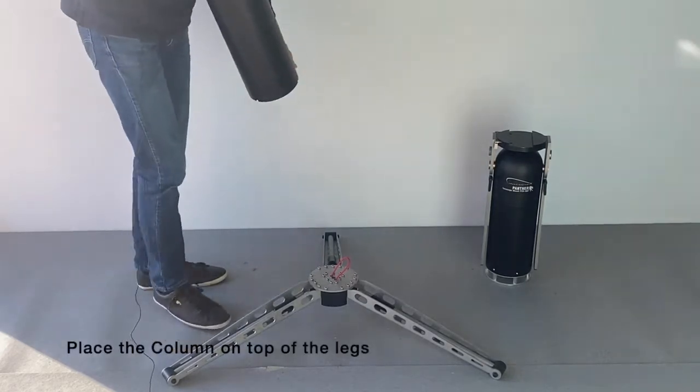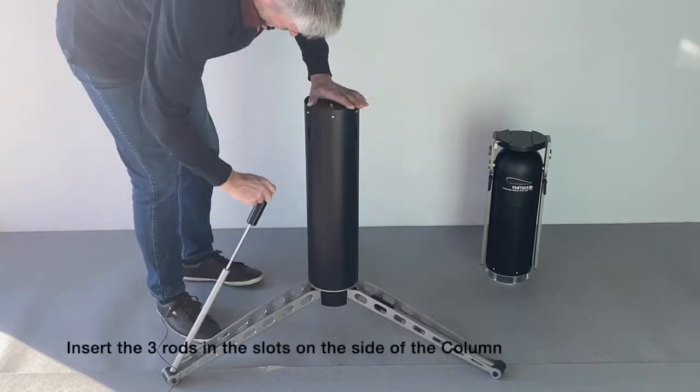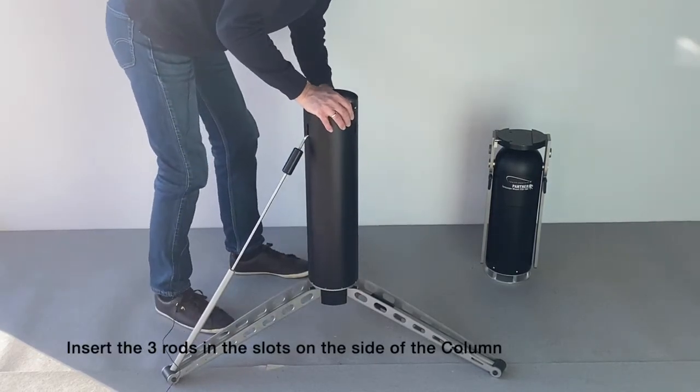Place the pier column on top of the leg assembly and insert the three rods into the slots on each side of the pier column.